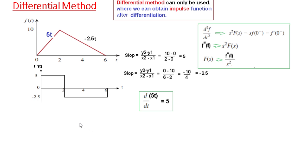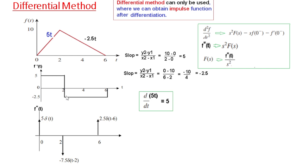We differentiate again to get the impulse functions. The differentiation of a constant is 0, but there are sudden changes at the transitions. At t = 0 there is a jump of +5, giving 5δ(t). At t = 2, the value drops from 5 to minus 2.5, a change of minus 7.5, giving minus 7.5δ(t − 2). At t = 6, it rises from minus 2.5 to 0, giving 2.5δ(t − 6).